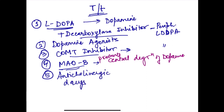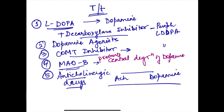Anticholinergic drugs are also used. The basal ganglia contains spiny neurons that release acetylcholine, and it is the balance between acetylcholine and dopamine that maintains adequate basal ganglia functioning. Anticholinergic drugs restore this balance and are especially useful for patients with severe tremor. However, they are not used in old age.